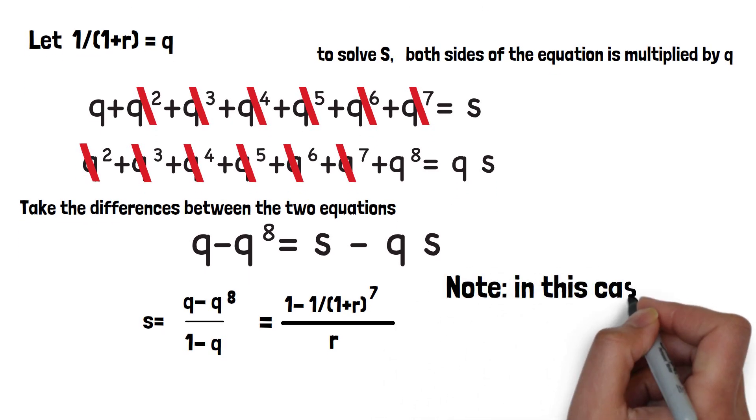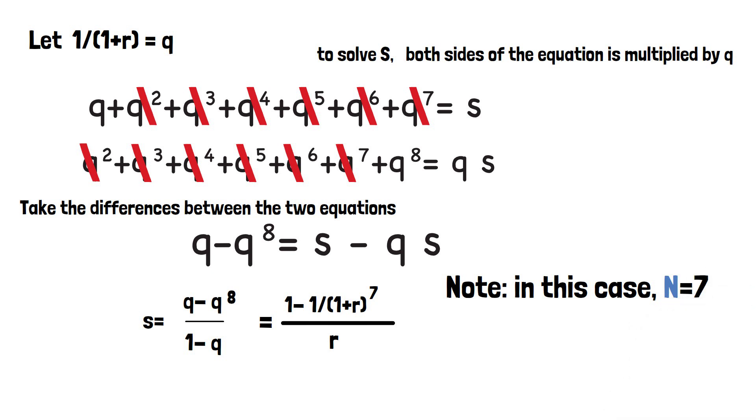Note that in this case, the n, the number of years is 7. So the more generic form for this sum would be shown as this.